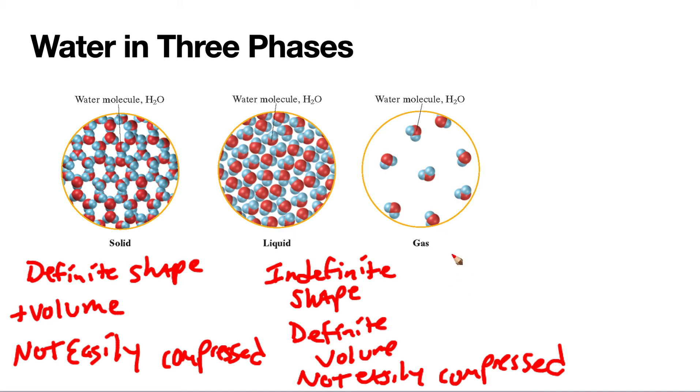And then a gas. It's an indefinite shape and volume. When this liquid goes to a gas, it's going to vaporize. So we have an indefinite shape and volume, and they're easily compressed.